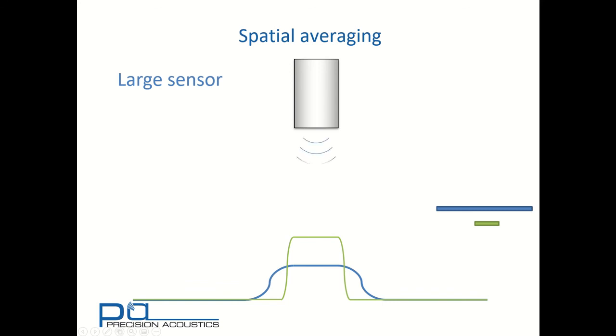Therefore by using a large sensor we've inadvertently underestimated amplitude and overestimated beam width. If we only had that one large sensor available we'd be unaware of the errors in our measurement.